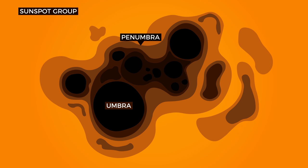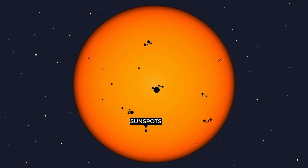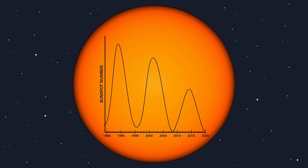Solar cycles dictate the amount of spots on the solar disk, with solar maximum having many sunspots and solar minimum having little or no sunspots. Solar cycles usually last about 11 years, with the last maximum being in 2014.